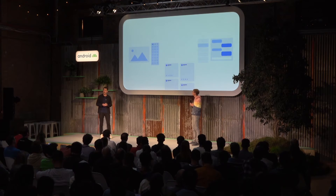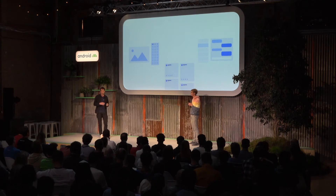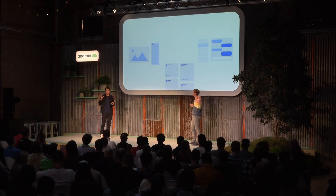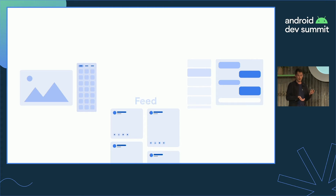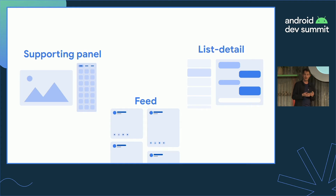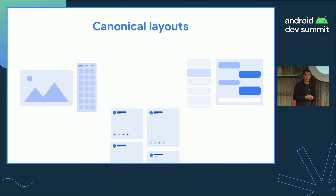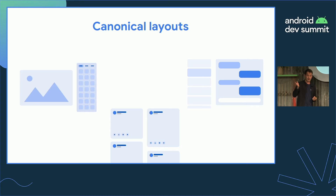Now let's take a look at more complicated examples using a similar framework. These examples involve components that move in relation to each other and the window itself as the window size changes. We identified three patterns — Feed, Supporting Panel, and List Detail — which are the most common throughout the variety of apps you can build. We call them canonical layouts, because they are our opinionated way of arranging components on a screen and changing that arrangement based on the window size.